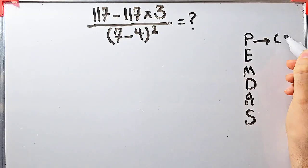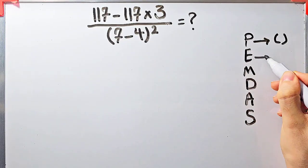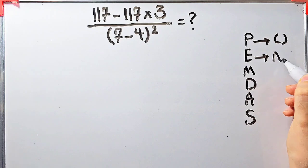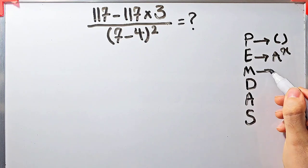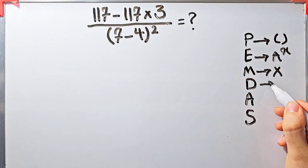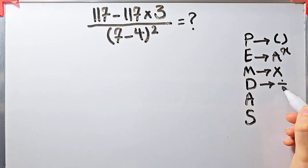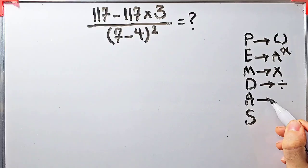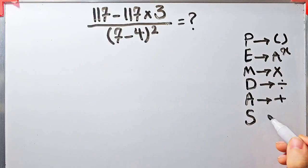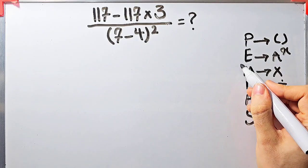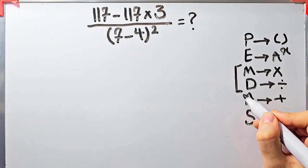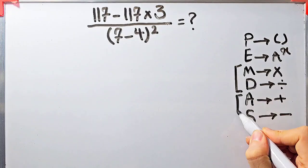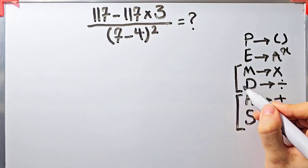In this rule, P stands for parentheses, E stands for exponent, M stands for multiplication, D stands for division, A stands for addition, and S stands for subtraction. Multiplication and division have the same level of priority; also addition and subtraction have the same level of priority.